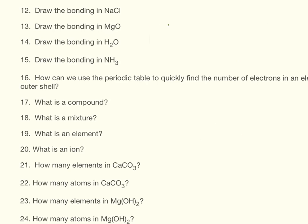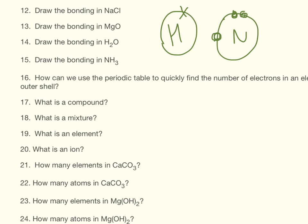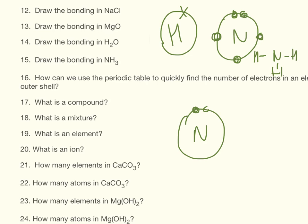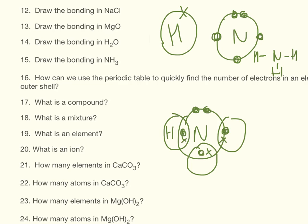For ammonia, hydrogen has one electron. Nitrogen has five electrons. It helps if you know that nitrogen's shape is like this. Most of the time in the exam, they will actually give you a scaffold to help you draw covalent molecules. But I'm mean, so I don't.